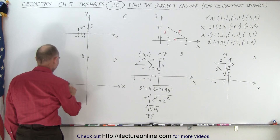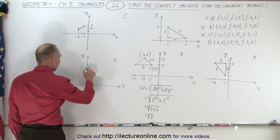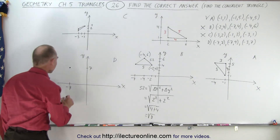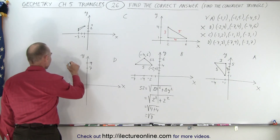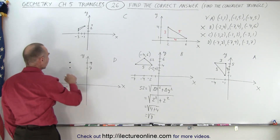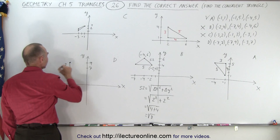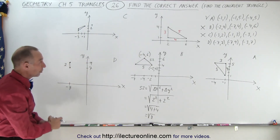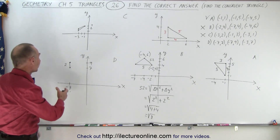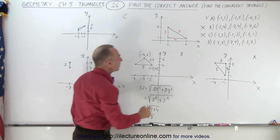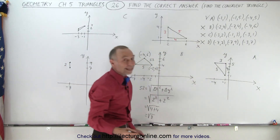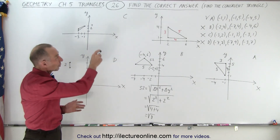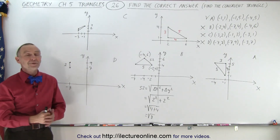For Triangle D, the first point is (-7, 7) and the next is (-7, 9). The distance between those two is equal to two, and none of the sides of our initial triangle has a length of two. So I don't even need to find the third point — Triangle D is not congruent either. It turns out that A is the only one of the four triangles congruent to the given triangle, and that is how it's done.